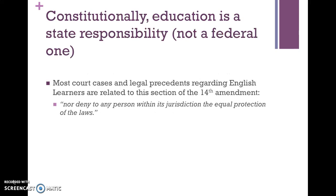According to the Constitution, education is a state responsibility, not a federal one. The federal government has certain powers and responsibilities — among them banking and having a court system — but everything else is left up to the state. That includes driver's licenses, marriage licenses, and schools. Most court cases and legal precedents regarding English learners relate to this section of the 14th Amendment, about states not denying to any person within its jurisdiction the equal protection of the laws.